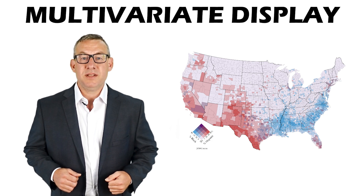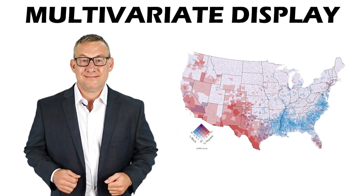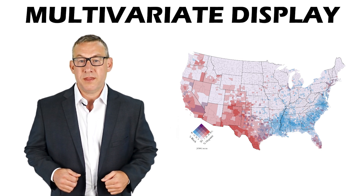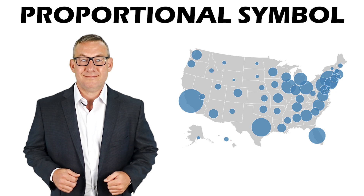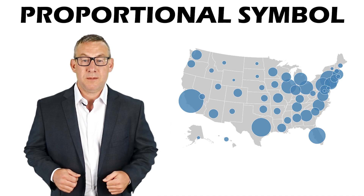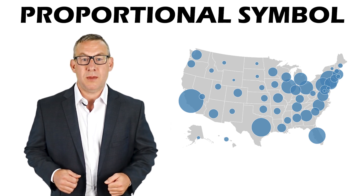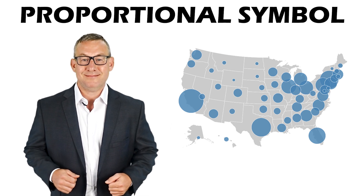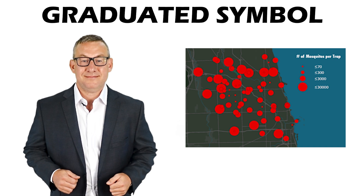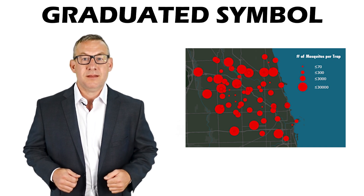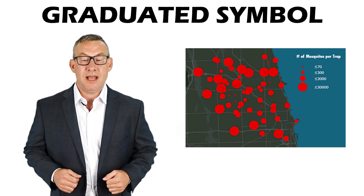A multivariate display has more than two sets of data on a single map. On a proportional symbol map, the size of the symbol corresponds to the magnitude of the mapped feature. On a graduated symbol map, the size of a symbol represents a range of values.